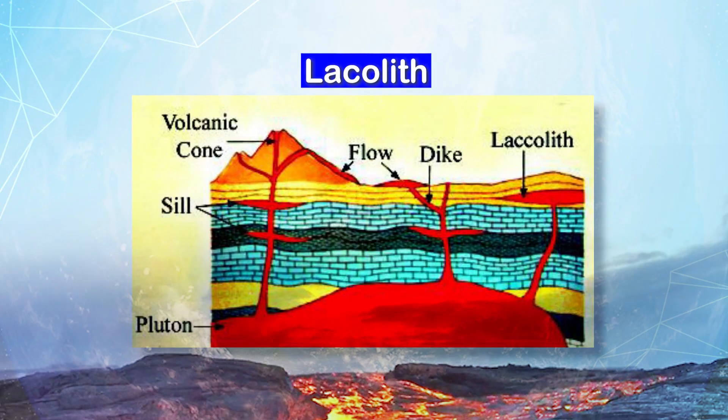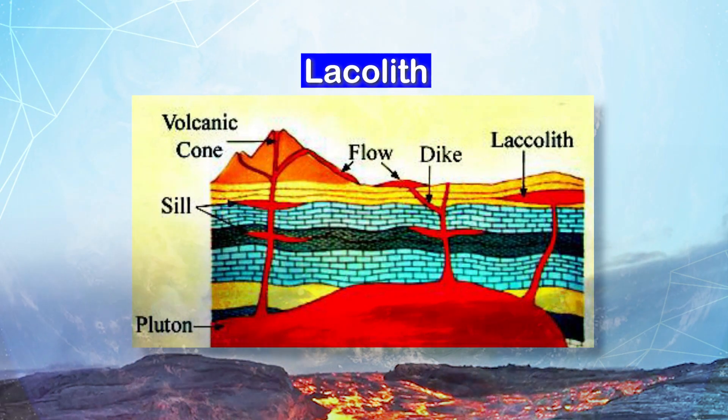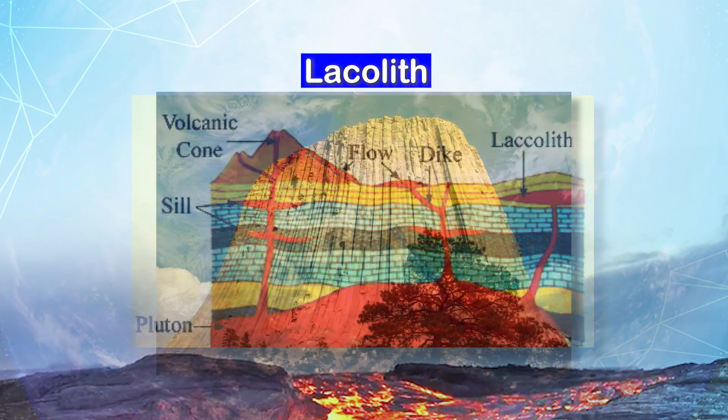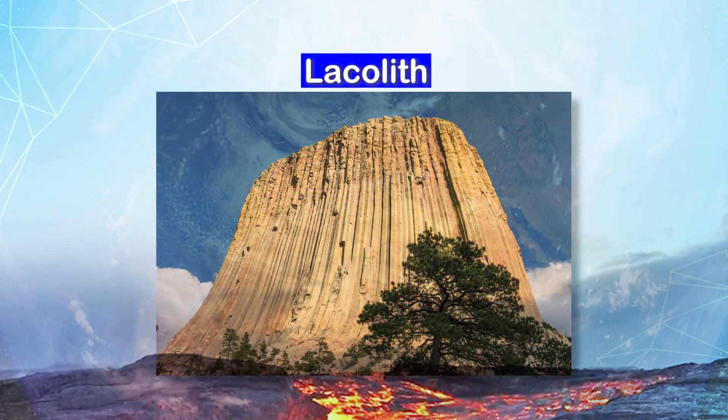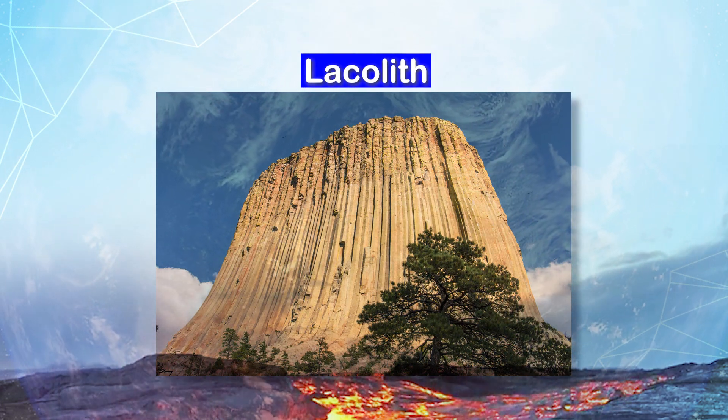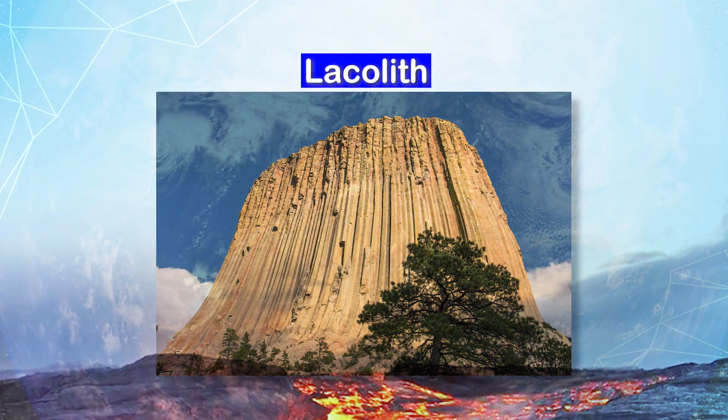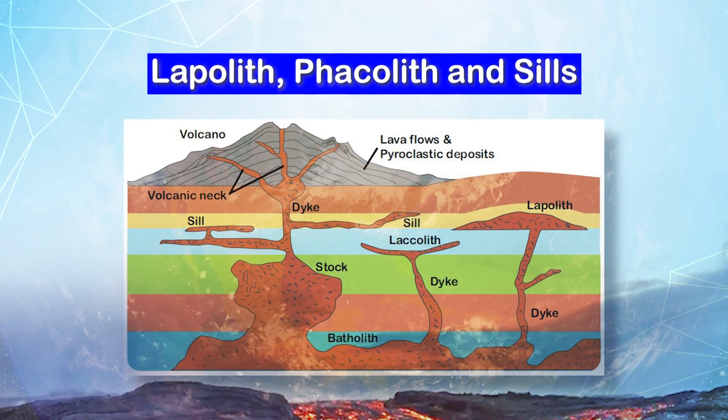Batholiths appear on the surface only after denudational processes remove the overlying materials. The second is laccolith — large dome-shaped intrusive bodies with a level base connected by a pipe-like conduit from below. It resembles the surface volcanic domes of composite volcanoes, only these are located at deeper depths.